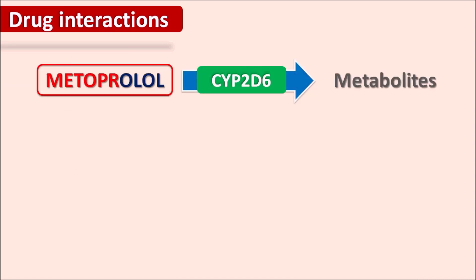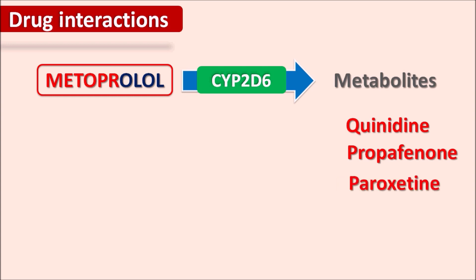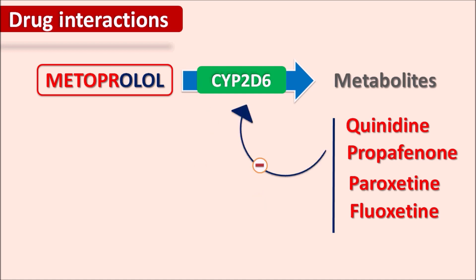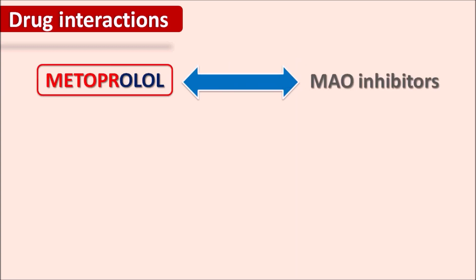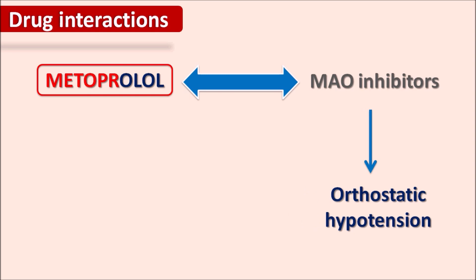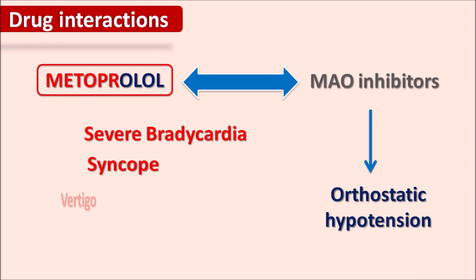Regarding drug interactions: metoprolol is metabolized by the cytochrome P450 system, particularly CYP2D6. Drugs such as quinidine (class I antiarrhythmic), propafenone (class I antiarrhythmic), and antidepressants like paroxetine and fluoxetine can inhibit CYP2D6, increasing metoprolol plasma levels and causing increased toxicity. The metoprolol dose should be reduced when co-administered with these drugs. MAO inhibitors, used as antidepressants, can produce orthostatic hypotension, and combining them with metoprolol may lead to severe hypotension, bradycardia, syncope, and vertigo.